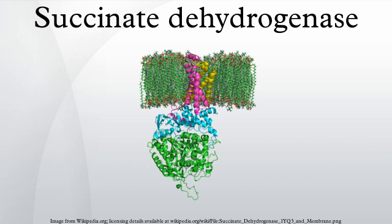SDHC provides the binding site for the oxidation of succinate. The side chains Thr-254, His-354, and Arg-399 of subunit A stabilize the molecule, while FAD oxidizes and carries the electrons to the first of the iron-sulfur clusters. This can be seen in image 5.